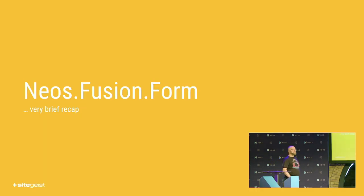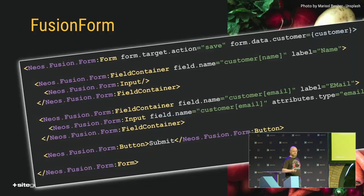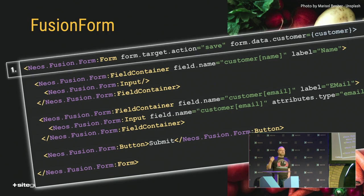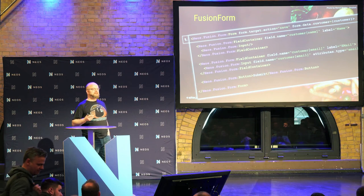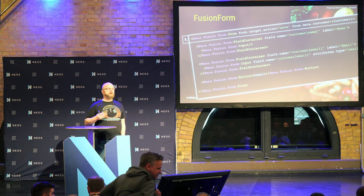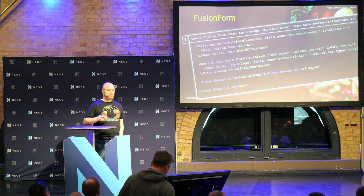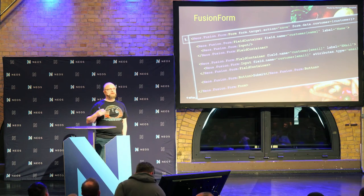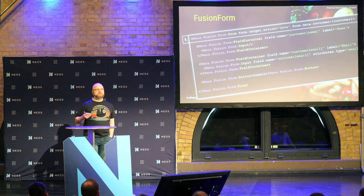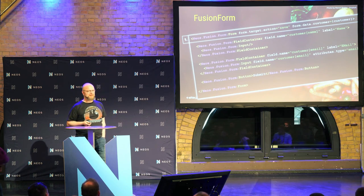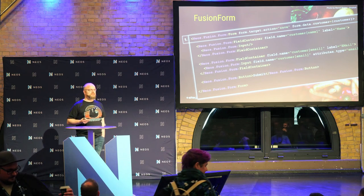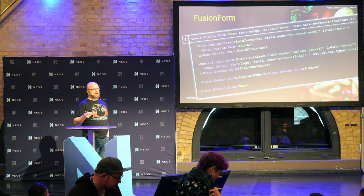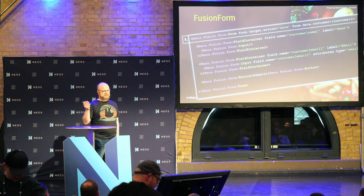First, NEOS FusionForms. The main prototype in the NEOS FusionForm package is obviously the form. And the main thing you will do with the form is to specify where it is submitted to, which is the form target action. And that usually refers to a flow controller action. The second thing you will specify with the form prototype is which data is to be modified, which may be objects or JSON structures or whatever.